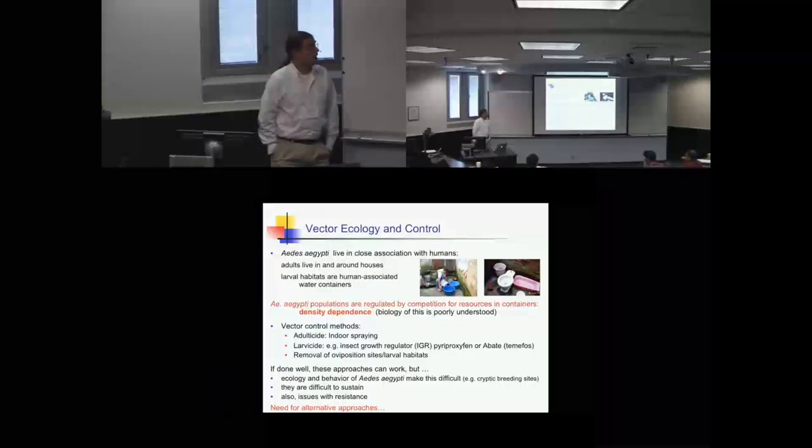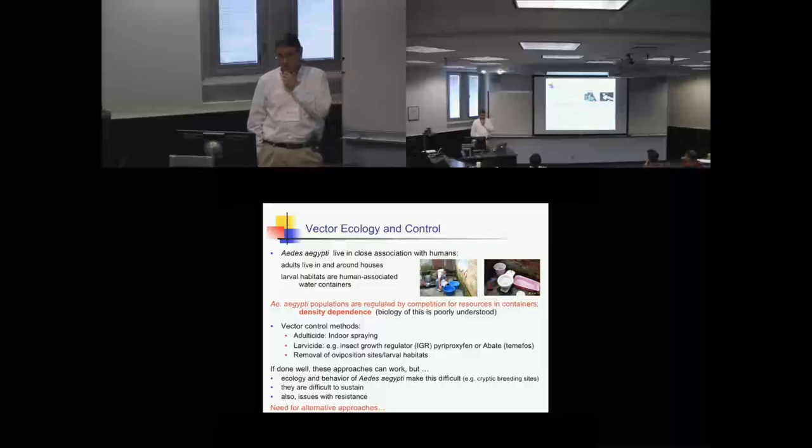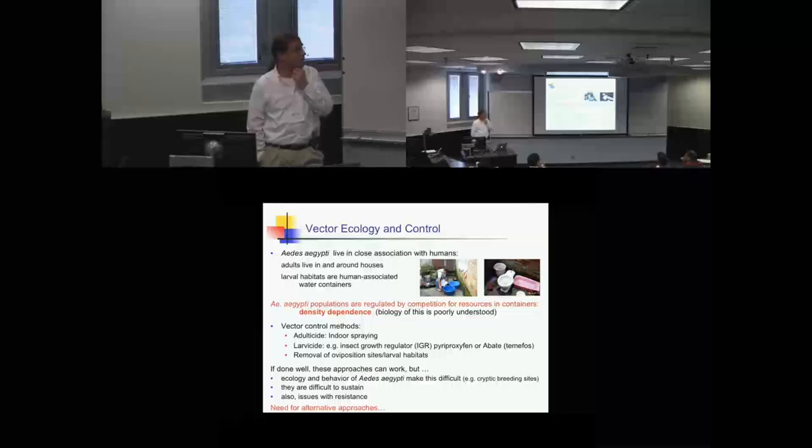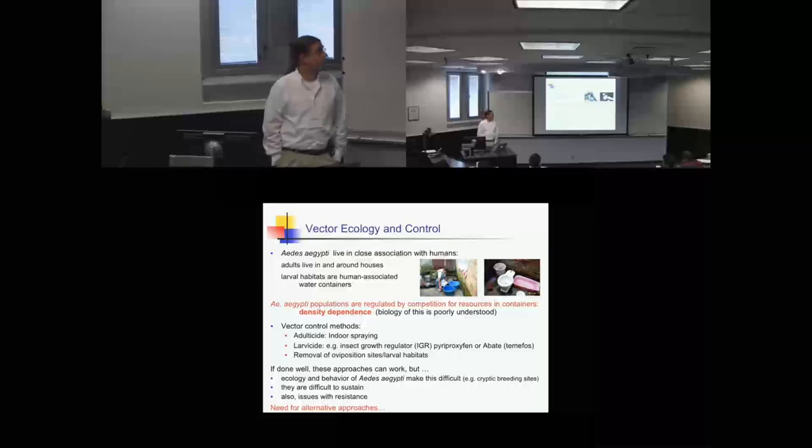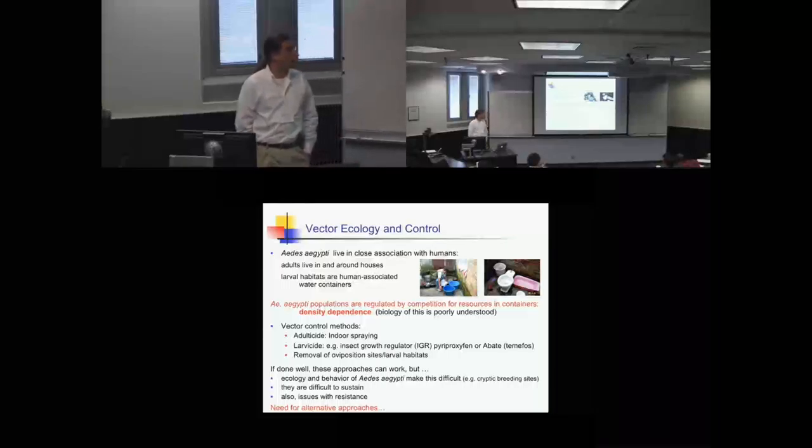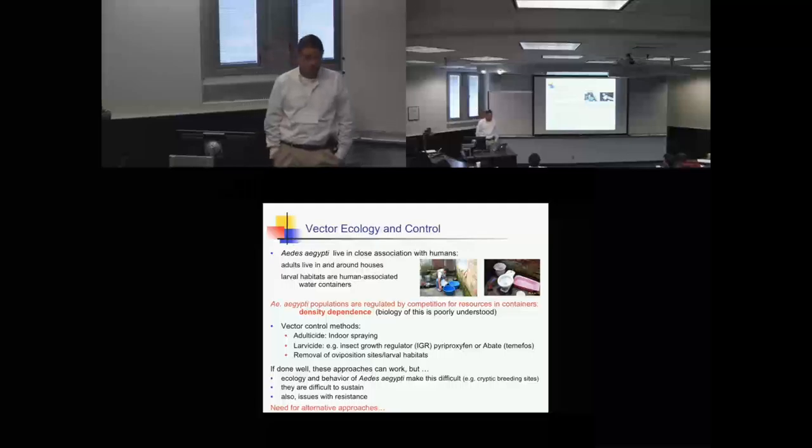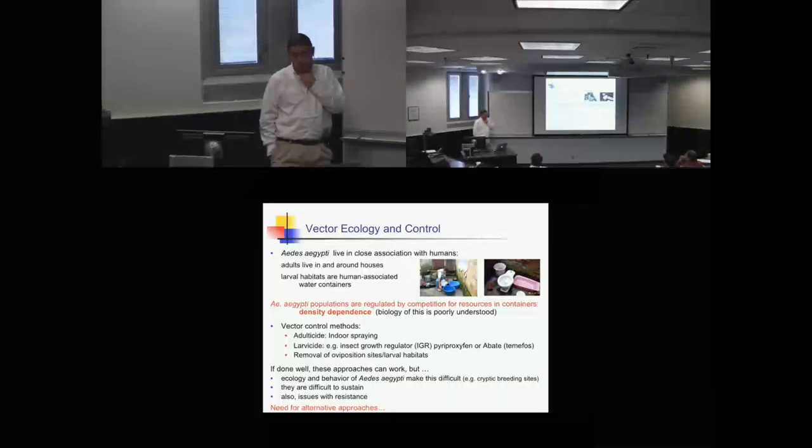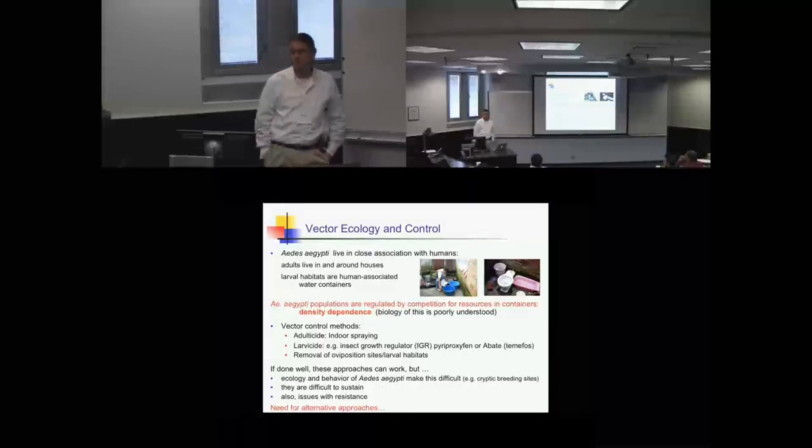The numbers of these mosquitoes are determined by a density-dependent process which is believed to be competition for resources in these containers where the immature mosquitoes grow. It's surprising that we don't really have a very good handle on this density-dependence. Given the medical importance of this species, we know remarkably little about its ecology. How do people control these mosquitoes? They either go after the adults, so they spray inside houses. They maybe try to put larvacide in water containers, or you try to remove these larval habitats.